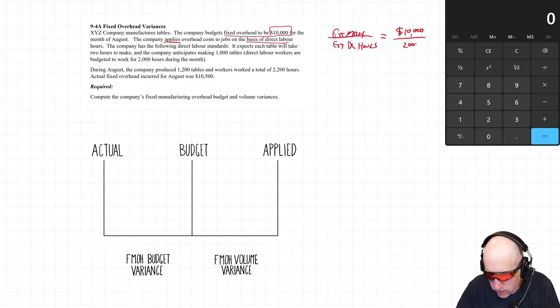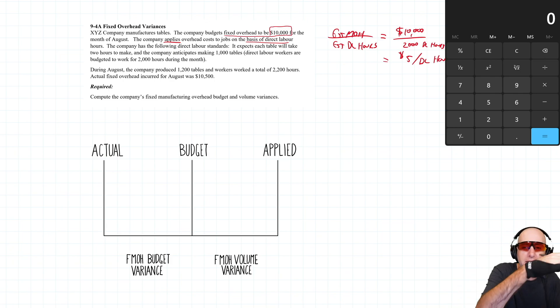So 2,000 direct labor hours means our fixed overhead cost is $5 per direct labor hour. This is a strange calculation to do because it's fixed overhead, right? We wouldn't expect it to go up and down with the amount of work - that's what makes a fixed cost fixed. But in any event we do it and I'll explain why in a moment.